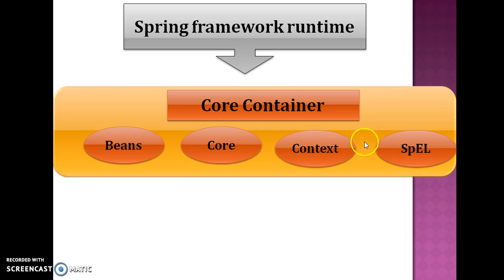There is one more module called Spring Context Support, which is not shown in this figure. This module provides support for integrating common third-party libraries into a Spring application context, such as caching libraries like EhCache, Guava, and JCache. It also provides integration support for Java Mail, schedulers like CommonJ and Quartz, and template engines like FreeMarker, JasperReports, and Velocity.